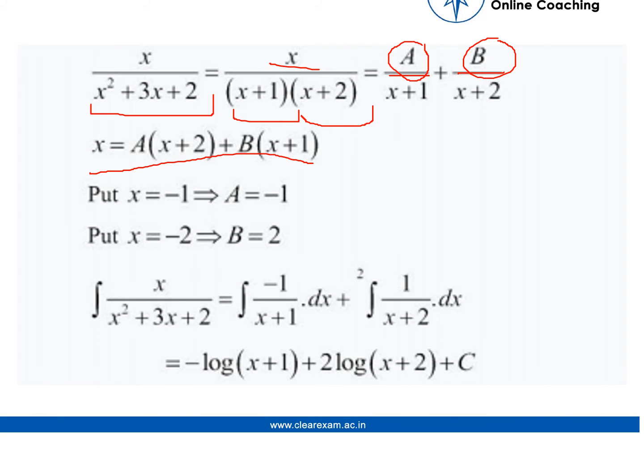So if we try hit and trial method, we will find that x equals to minus 1 and A equals to minus 1, and B equals to 2.